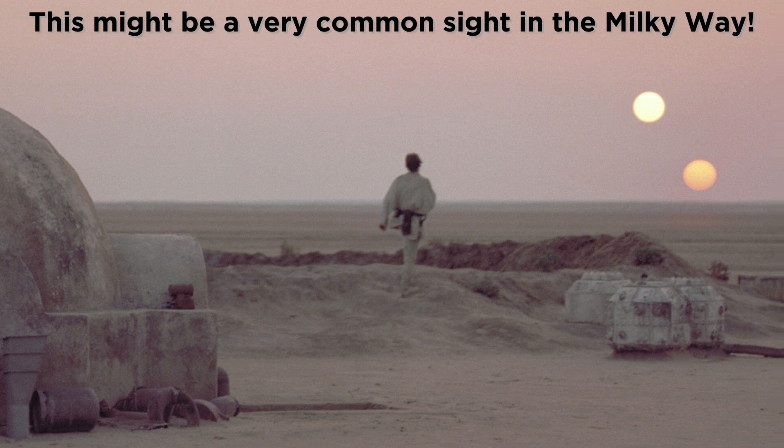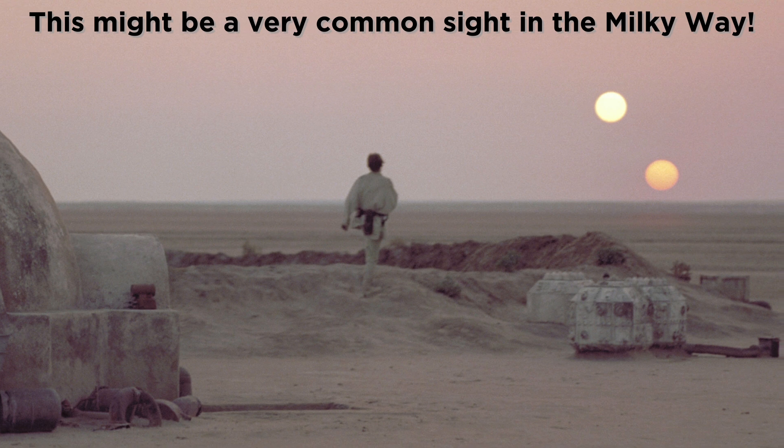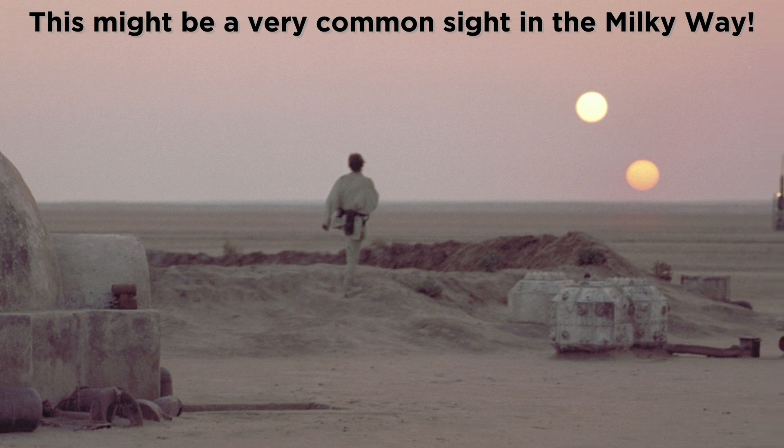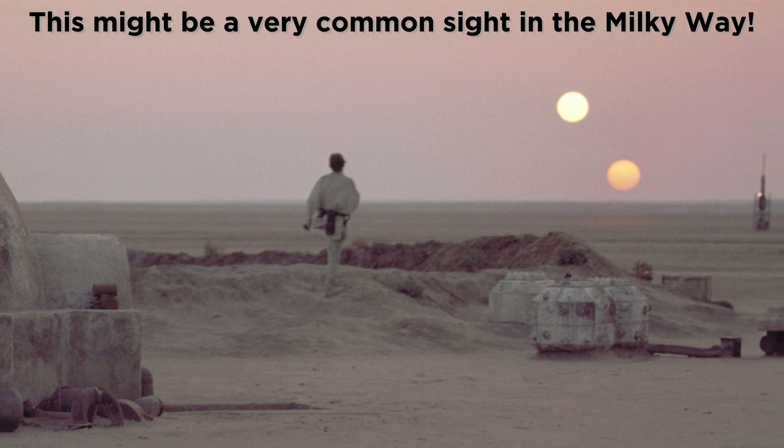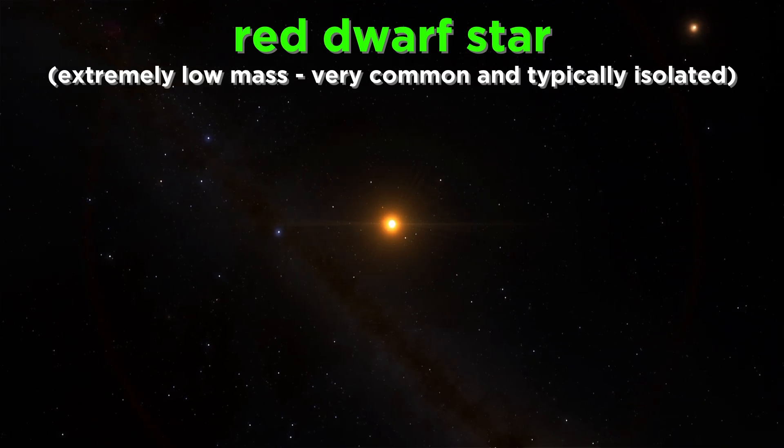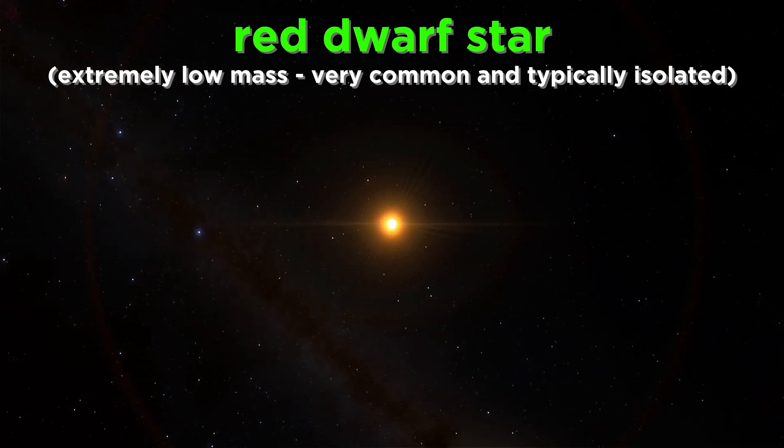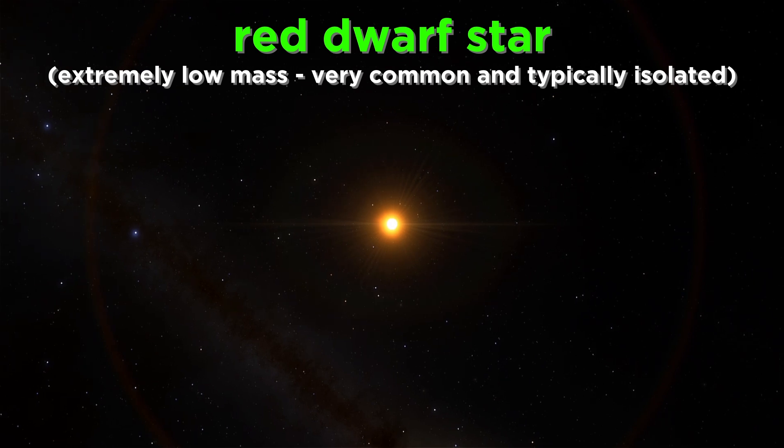So in actuality, the famous two sun dusk that we see on Tatooine in Star Wars might be a more common sight in the galaxy than what sunset looks like on Earth. We should note, however, that extremely low mass stars, such as red dwarfs, which are the most numerous type in our galaxy, are typically isolated.